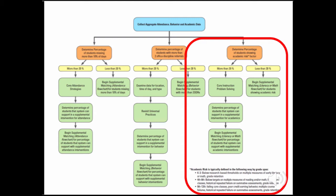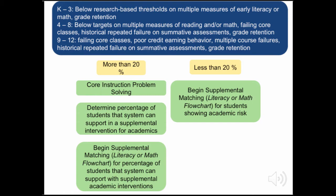As noted earlier, the thresholds for risk will vary based on content area and grade level. Our first step with academics is to identify the percentage of students who show academic risk. Modules 2.2 and 2.3 provide more specific guidance on how to identify risk and build intervention systems in response to common areas of difficulty in literacy and math. In grades K-3, students are typically identified as at risk if they have had a grade retention or score below research-based thresholds on multiple measures of early literacy or math. This is where traditional universal screening tools such as curriculum-based measures are utilized.